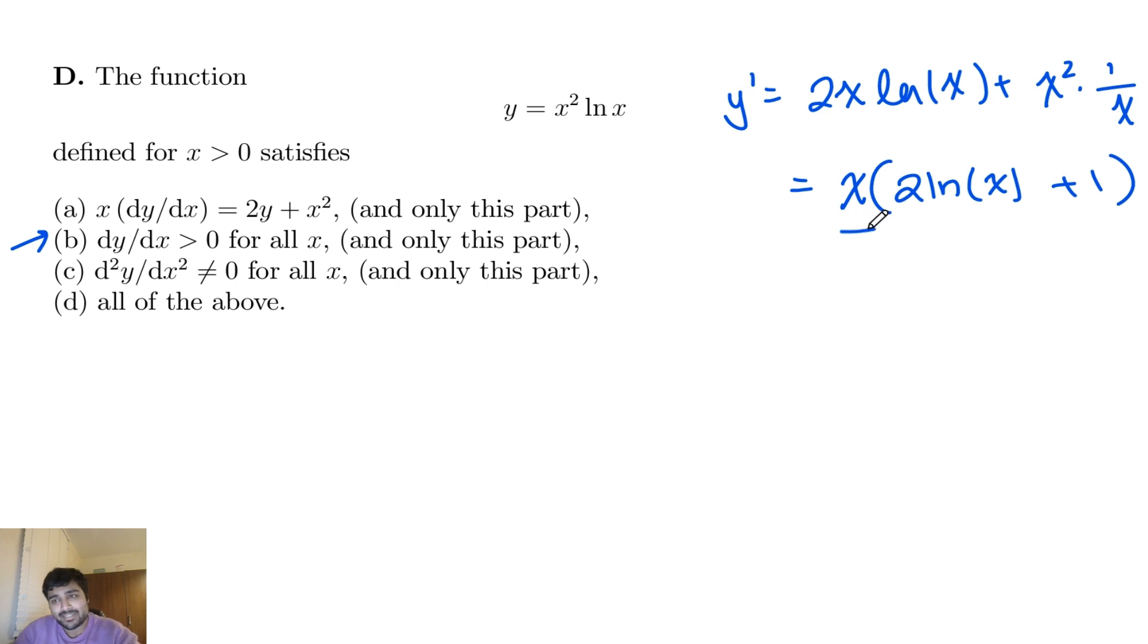The answer is no, because x is certainly positive for all x, because we're only looking at when x is positive. But this guy here, 2 ln x plus 1, that doesn't have to be positive for all x, because I know if I draw an ln x graph, when x is a very small positive real number, ln x is a very, very negative number.